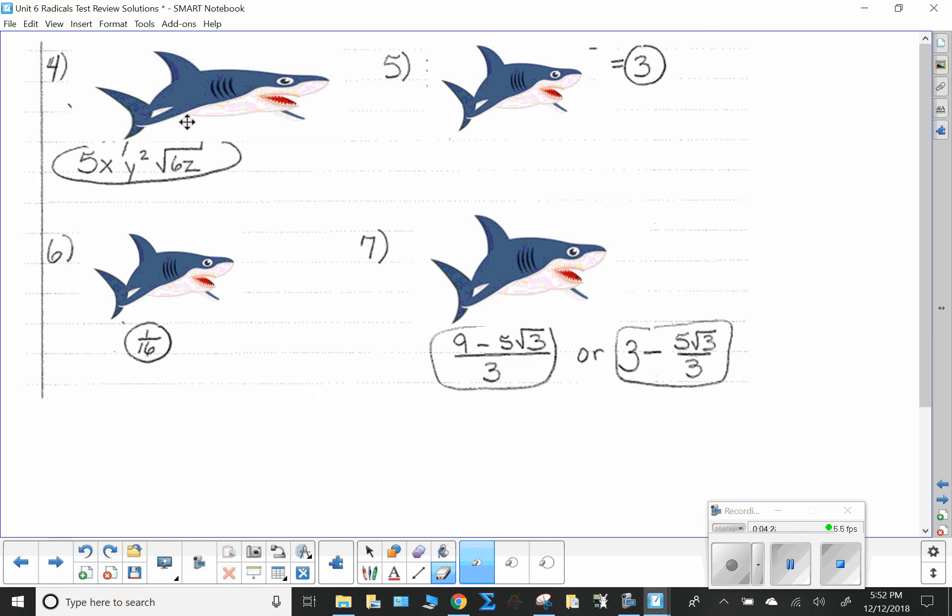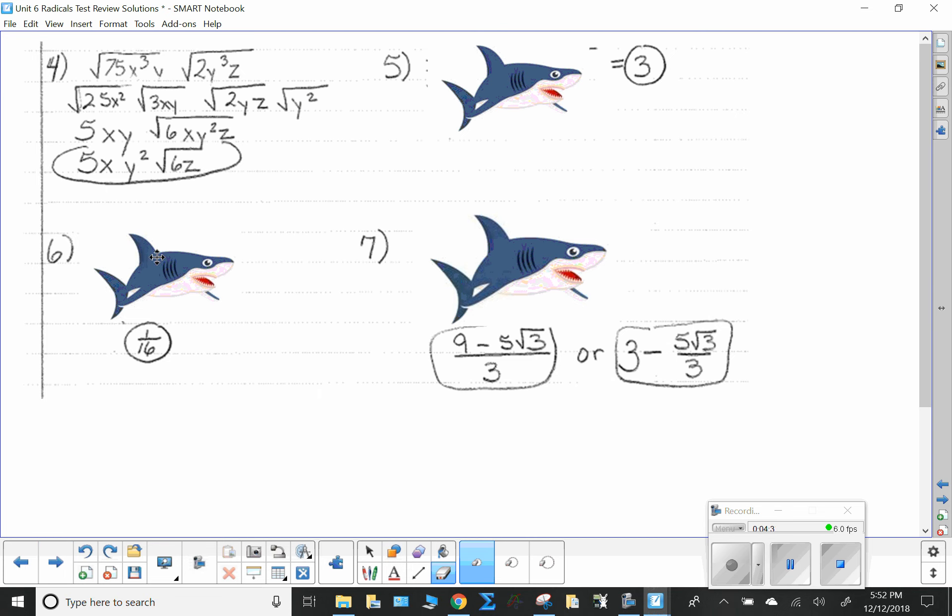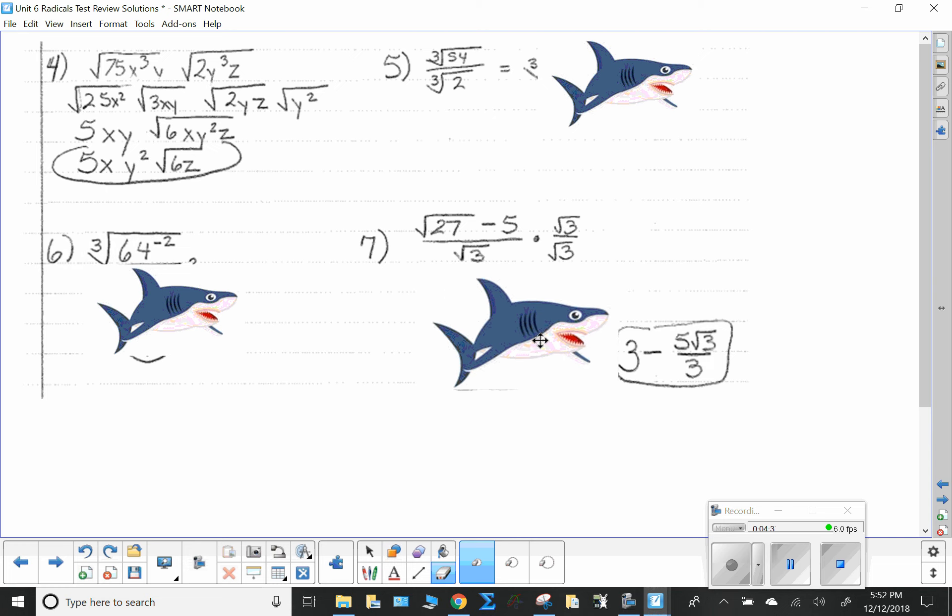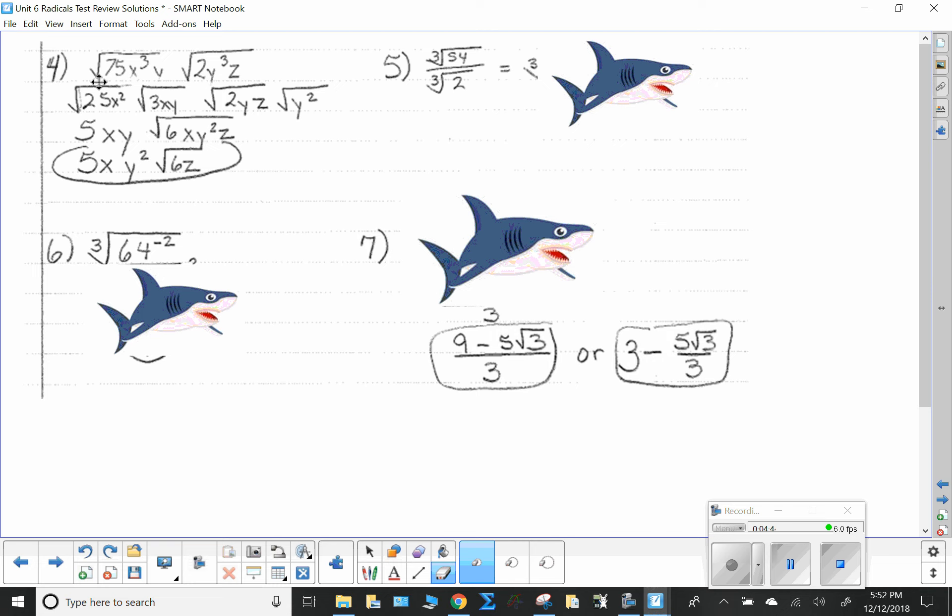Next up, we have square root of 75x cubed y times 2y cubed z. First off, it's a square root. So again, I'm going to think about my EIEIO. And it splits them like that. So it's an even index, check. Even inside. X, no. Y, no. Don't have to worry about absolute values.